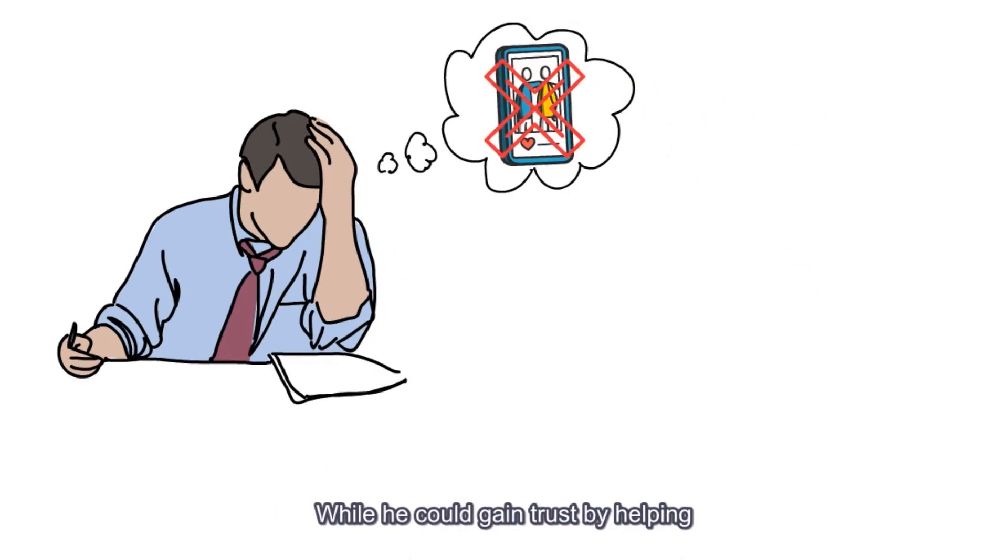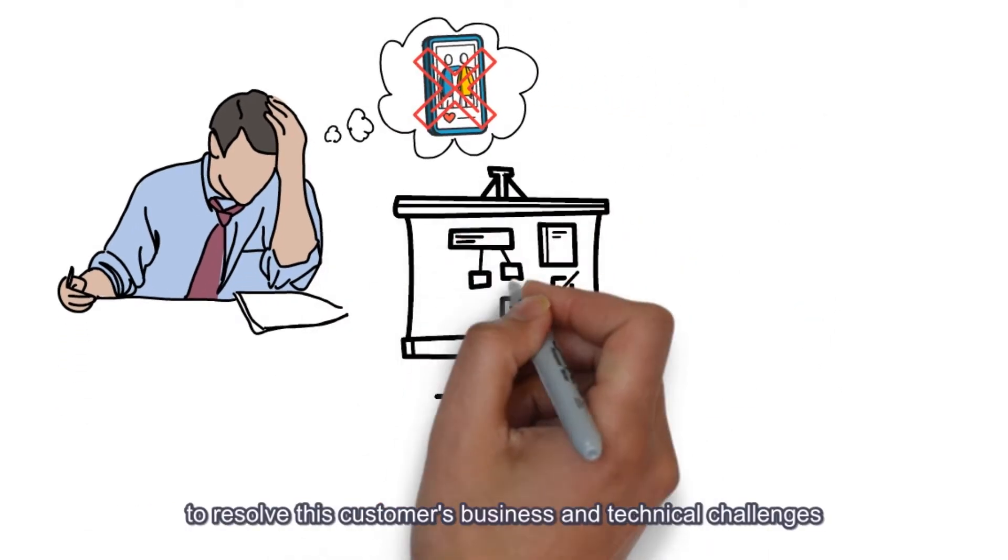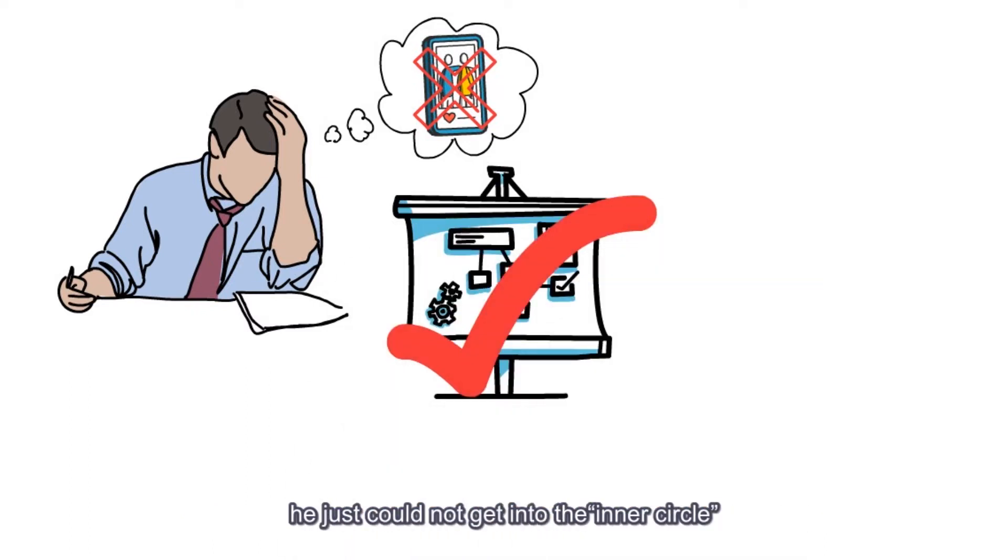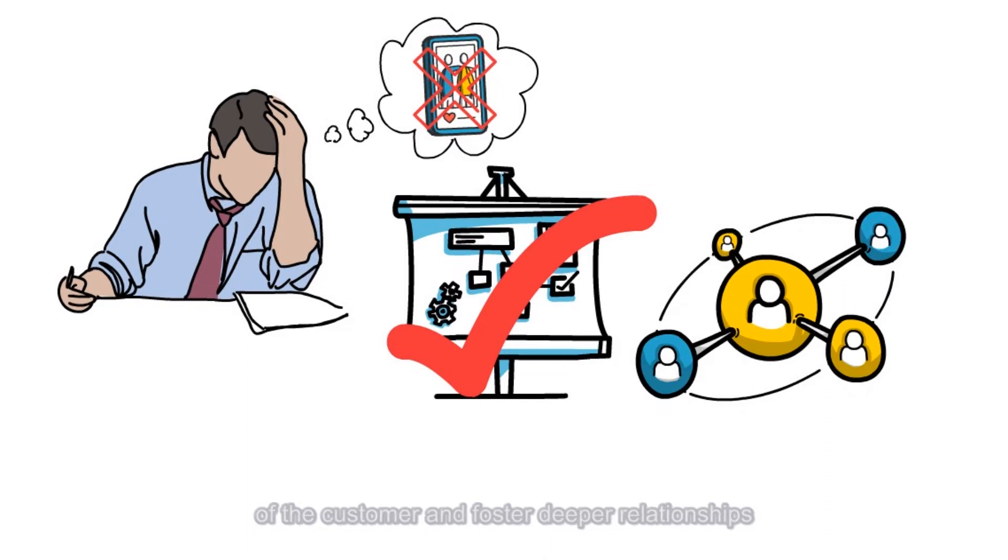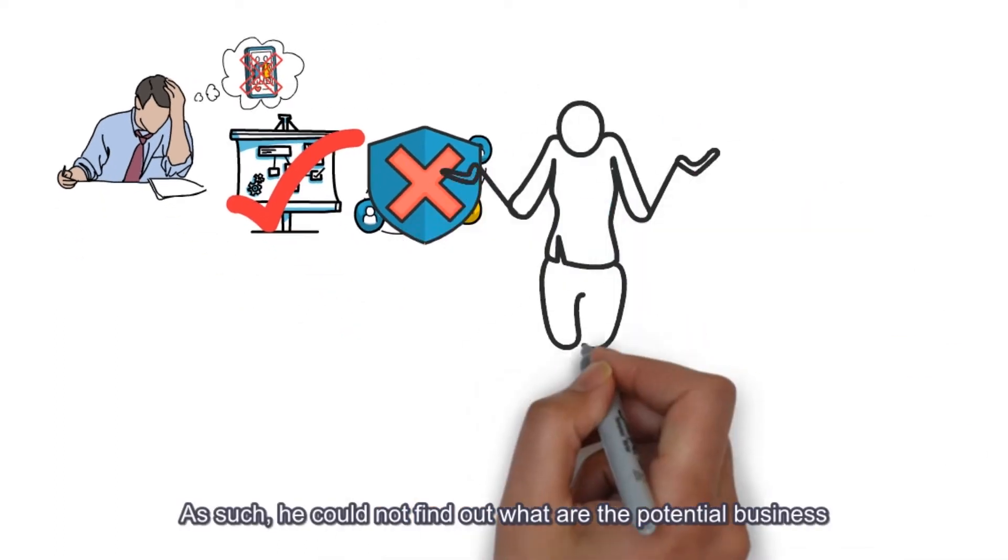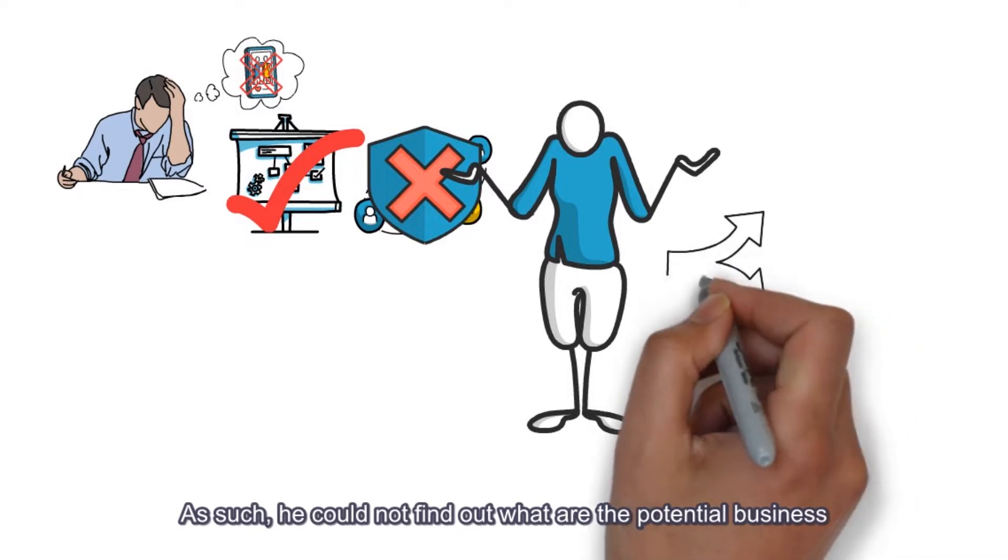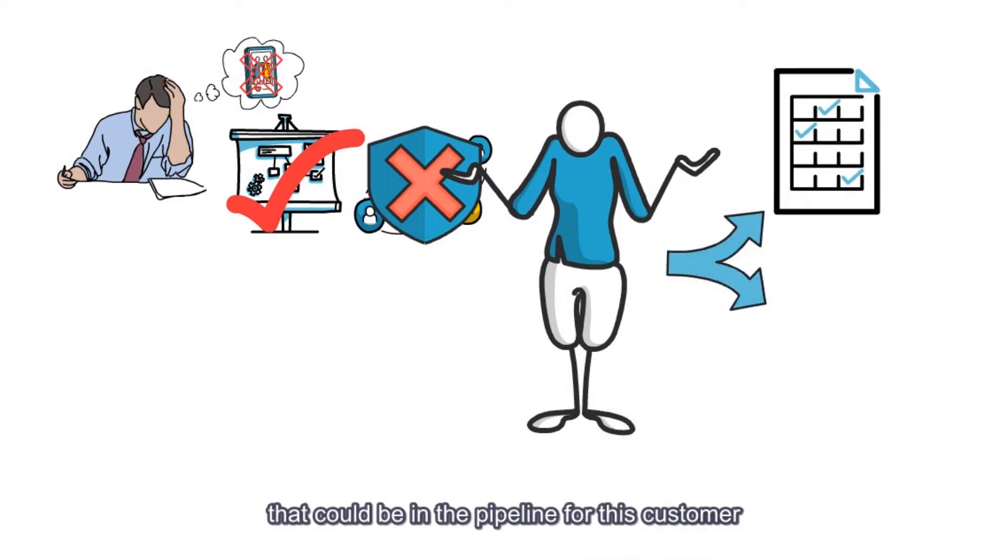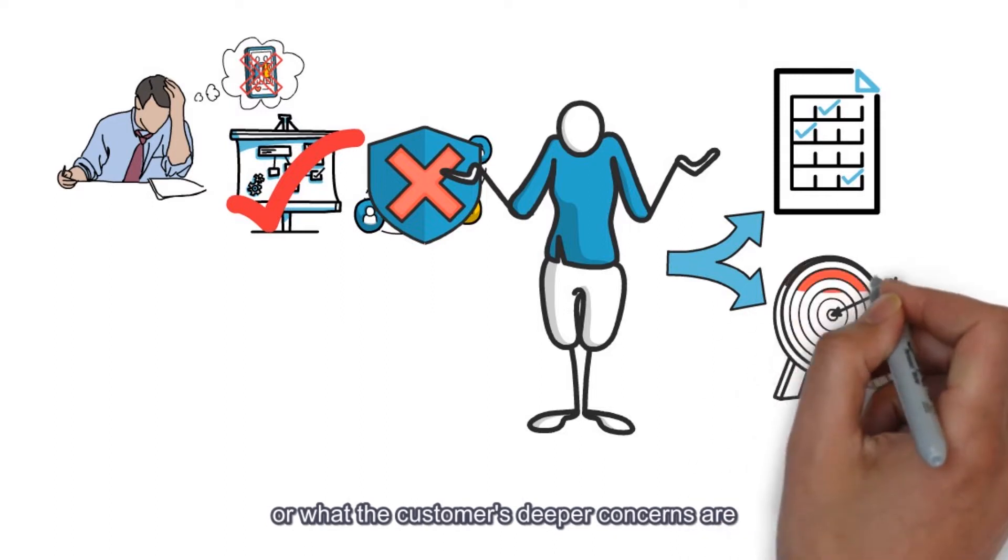While he could gain trust by helping to resolve this customer's business and technical challenges, he just could not get into the inner circle of the customer and foster deeper relationships. As such, he could not find out what potential business could be in the pipeline for this customer or what the customer's deeper concerns are.